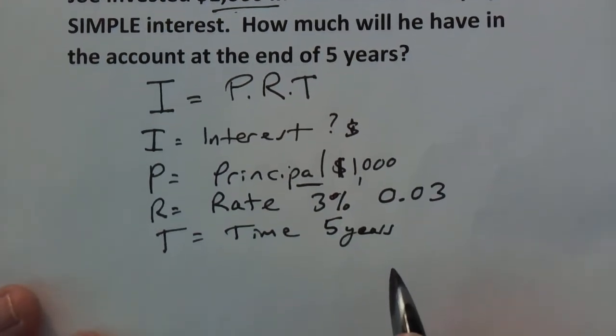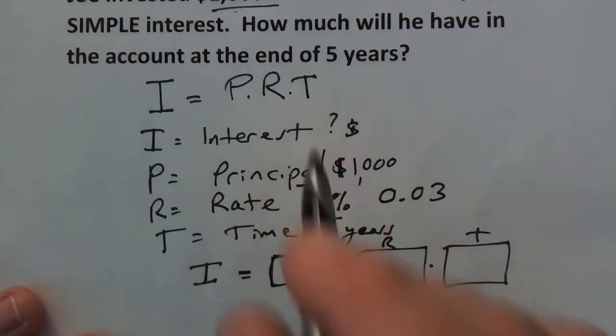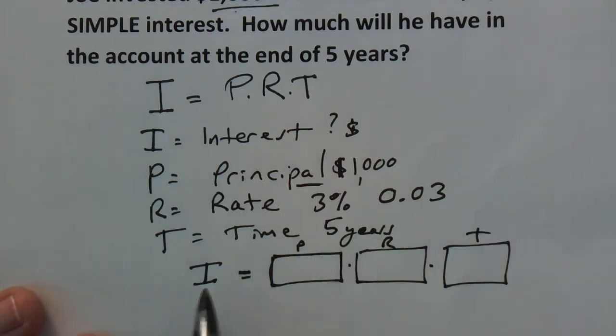All right, we're going to apply this to our formula and I'm actually going to show you two ways to do this. I like using boxes - that's our principal and we're going to multiply it by our rate and we're going to multiply it by our time. I just use the boxes because that way I can label them and then we can fill in the amounts from above.